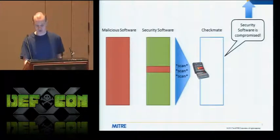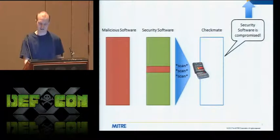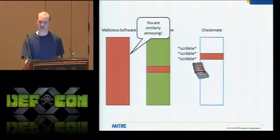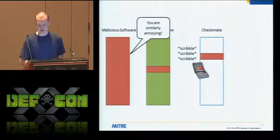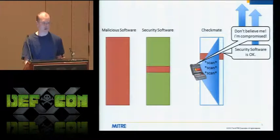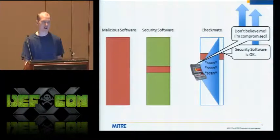We can add additional software to try to deal with this problem — we can add more software to check the security software. But if we do this, the attacker is just going to play the same game. Adding more software that's not fundamentally different won't make any change. Our program is called Checkmate — it checks the security software. The important thing is we're adding a self-checking mechanism that tells you our software may be forced to lie, but when it checks itself, it will signal that it's not actually okay.